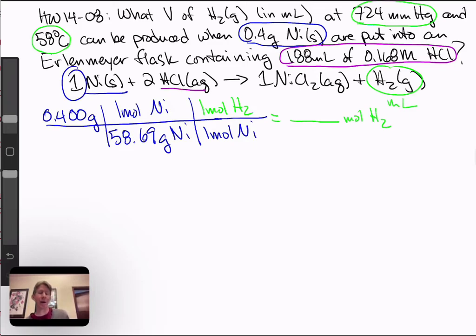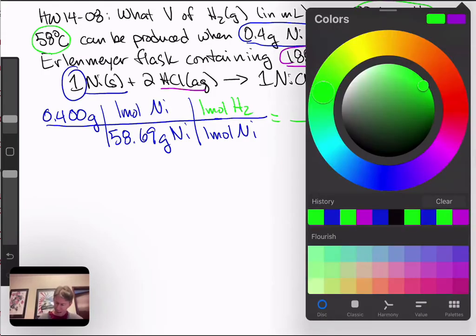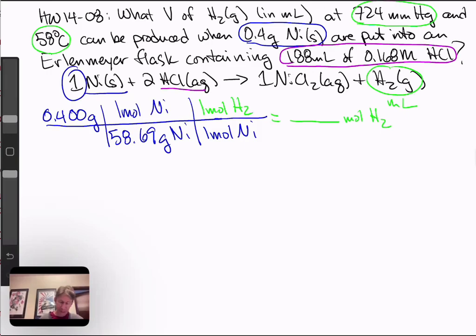And since this is a limiting reactant problem, we have to do this for each of the reactants, for both of them. And then choose the smaller one as the actual amount of hydrogen that we can make. Let's move on to our HCl, our hydrochloric acid.